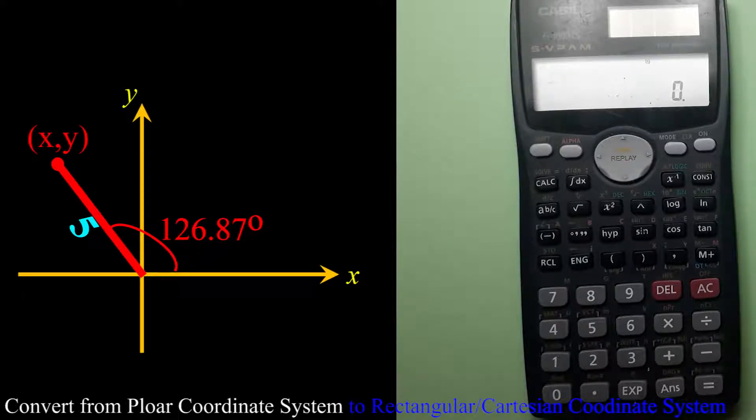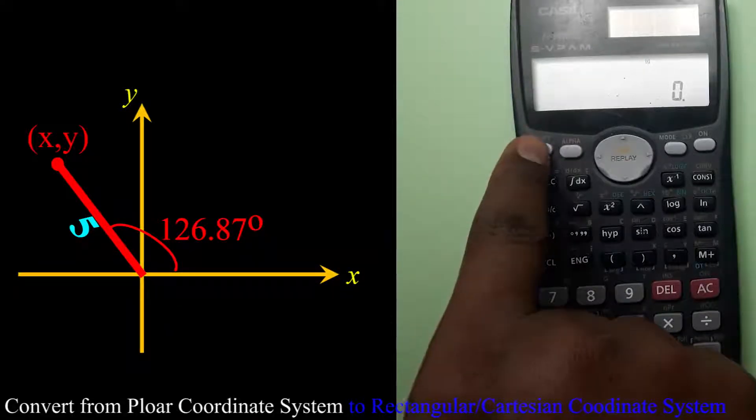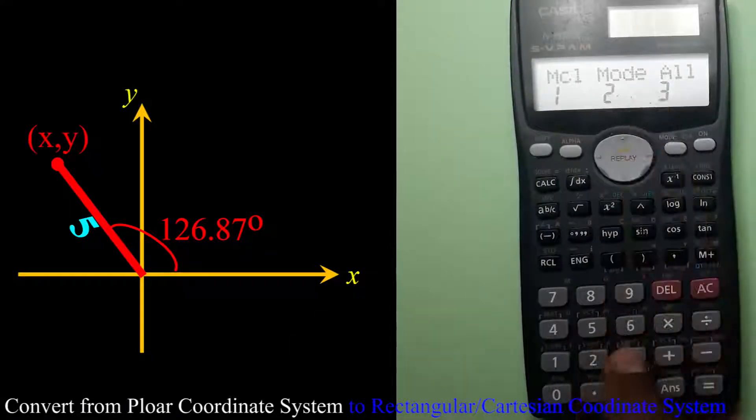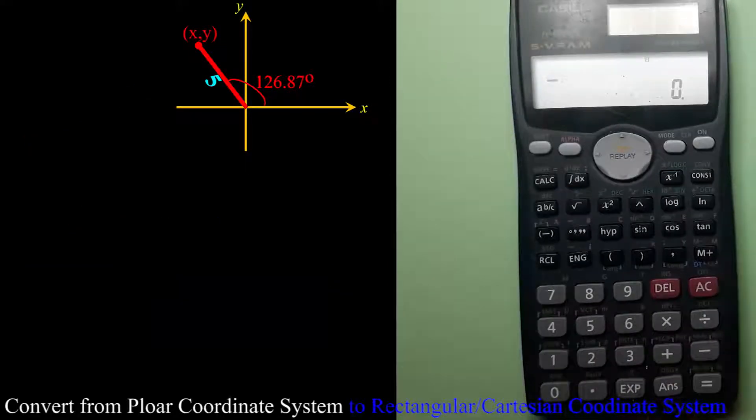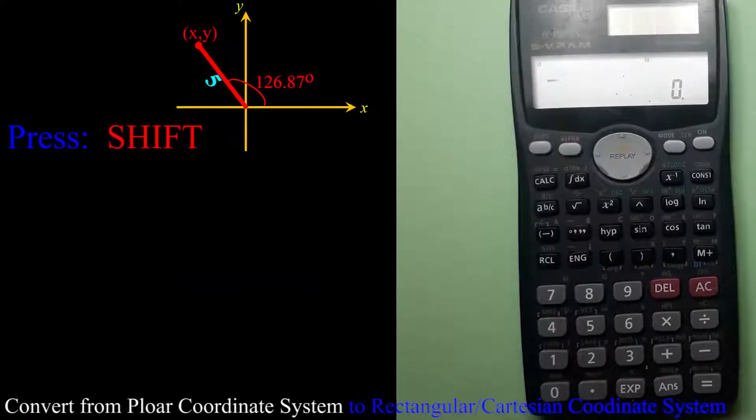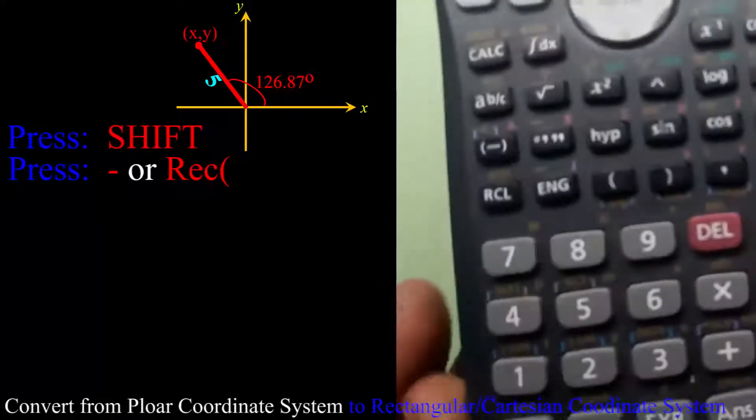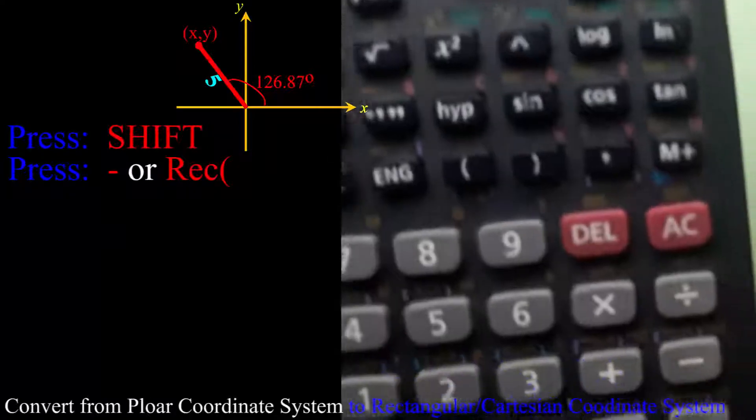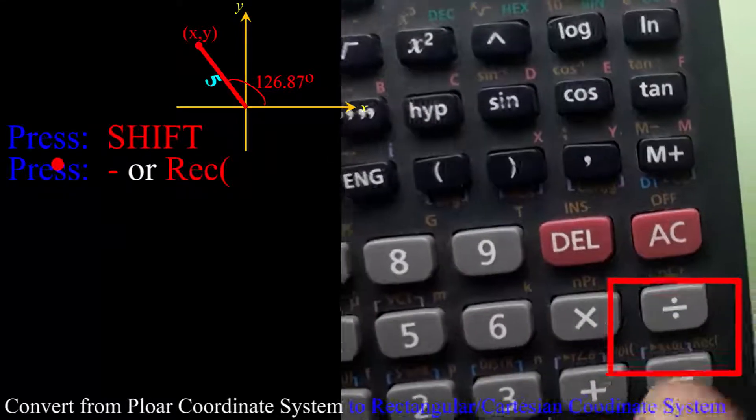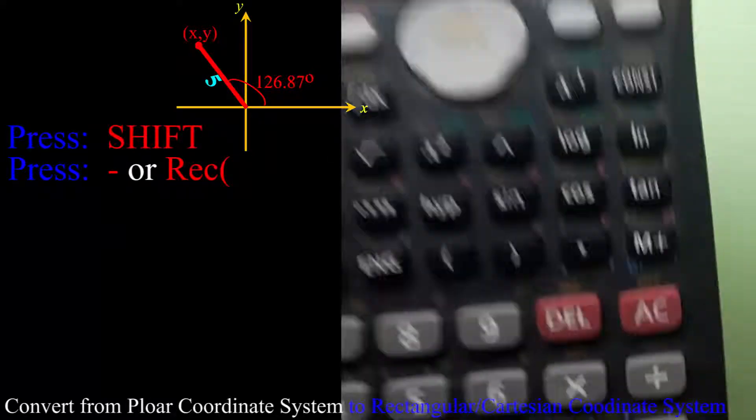Now if I want to know the rectangular coordinate of this point, I'm going to do like this: Shift, always start with clearing the memory, then Shift, then I will go to this negative sign. It says here REC, so it means rectangular form.